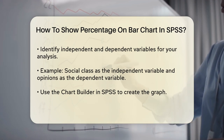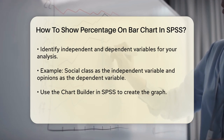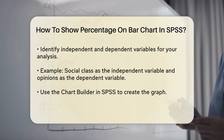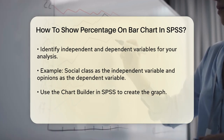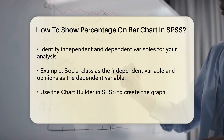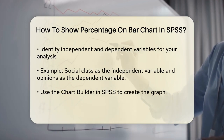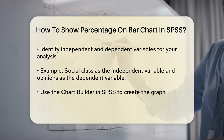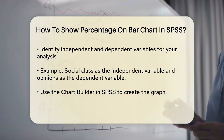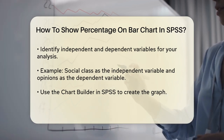Here's the important part. You need to specify that you want the percentages to be calculated for each category of your independent variable. So, if your independent variable is on the x-axis, you should use the total for each x-axis category.